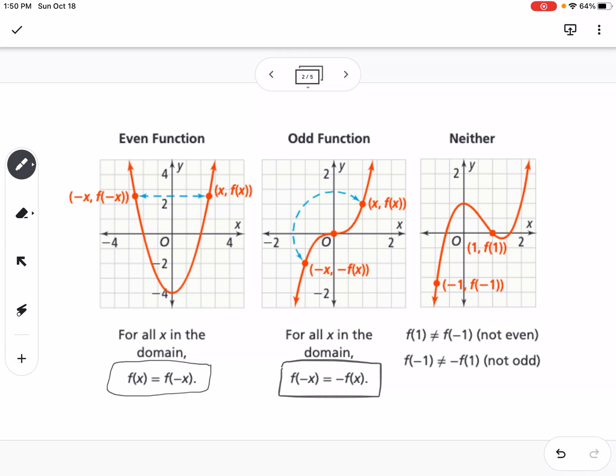Now in neither function, you can look right here, this is clearly a third degree function, but it's not an odd function, even though the degree is 3, because it's had shifts and transformations that make it not odd and not even.